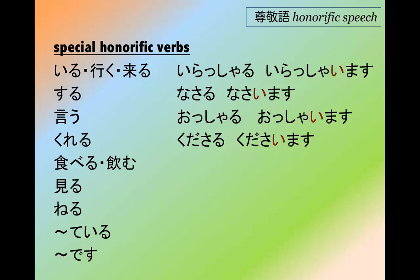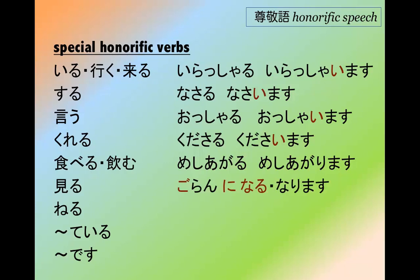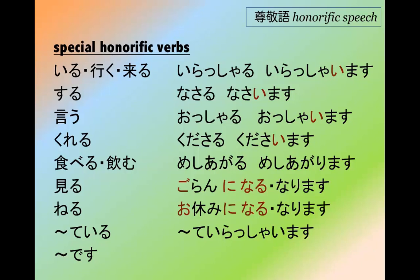Taberu and nomu both share the same honorific form: meshiagaru, or meshiagarimasu — note it is meshiagarimasu, not meshiagaimasu. Miru is a special noun plus ni naru: goran ni naru, goran ni narimasu. Neru is o-yasumi ni naru, o-yasumi ni narimasu. And the te-iru form uses the same irasharu with the te form in front of it: te irasharu, or te irashaimasu. This also applies as de irashaimasu.